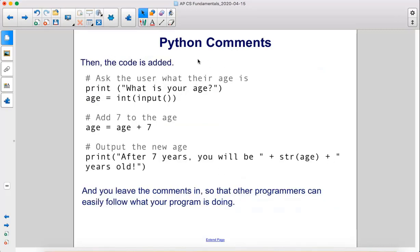Then the code is added. Under the first comment, ask the user what their age is, we print what is your age, and then save the user input as an integer into the variable age. Under the next comment, add seven to the age, we take the age they entered, we add seven, and then save that new value back into the age variable.